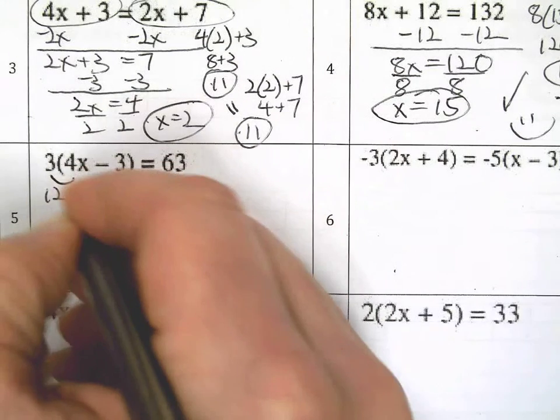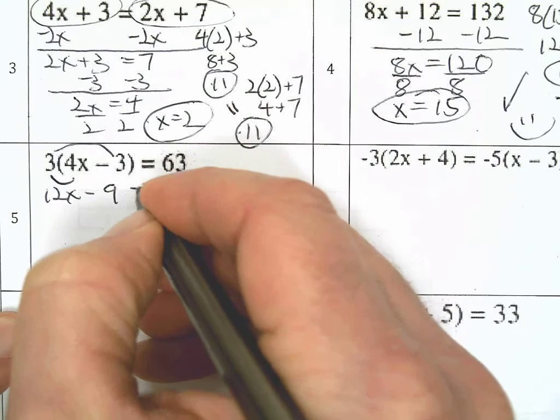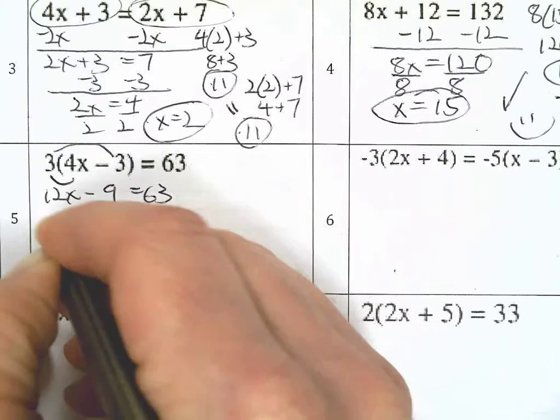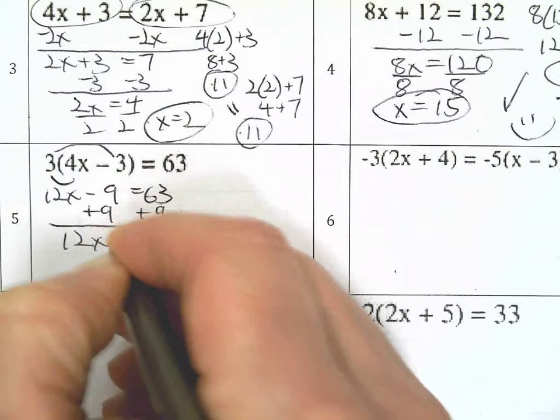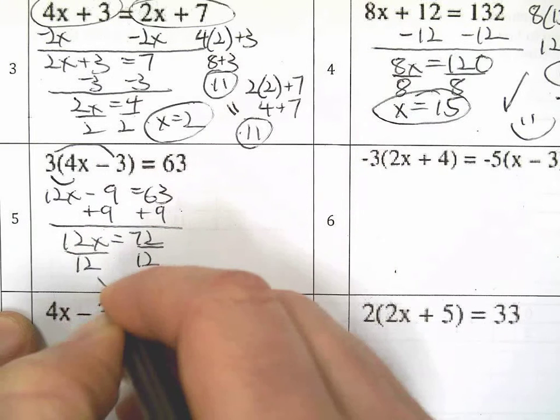Distributive property. 12x negative 9. Remember to distribute that thing outside to everything inside. Now we can work on inverse operations. Divide by 12. x equals 6.